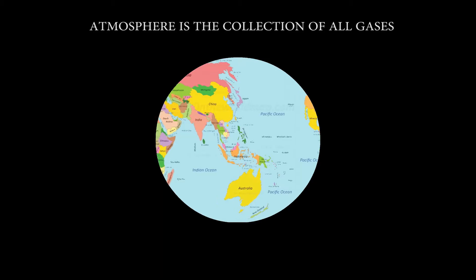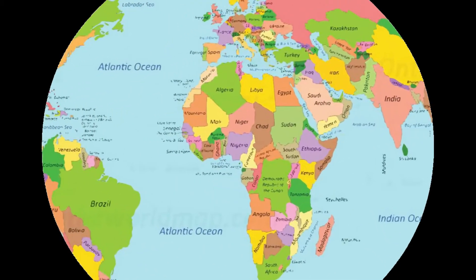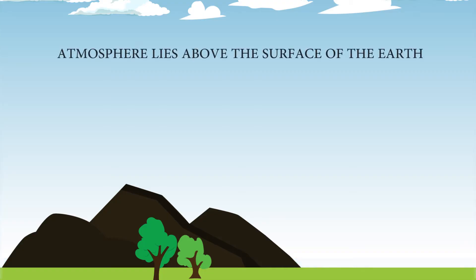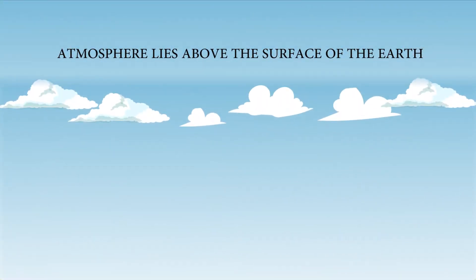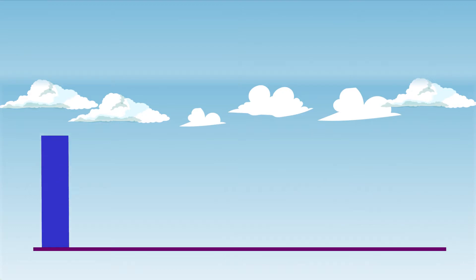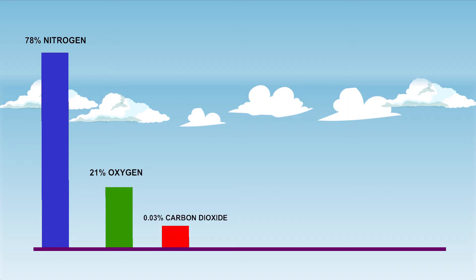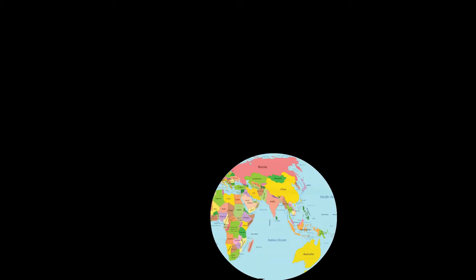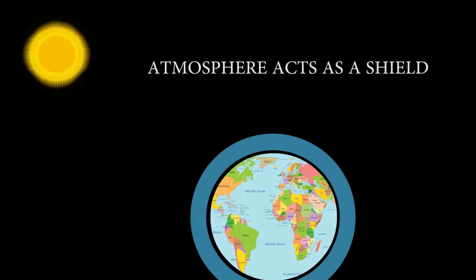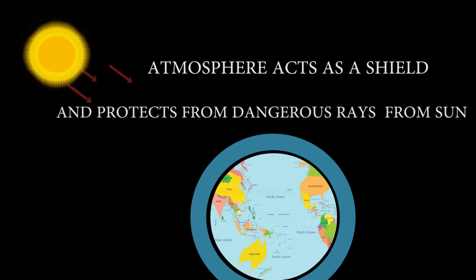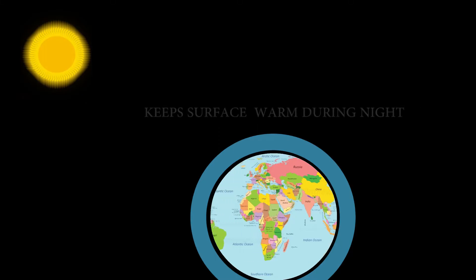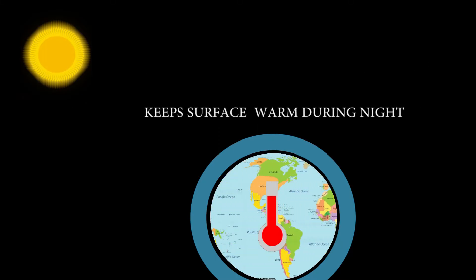Atmosphere is collection of all the gases on Earth. Major part of atmosphere lies above the surface of Earth. Atmosphere of Earth consists 78% nitrogen gas, 21% oxygen, 0.03% carbon dioxide, and rest are inert gases, water vapor, dust particles, hydrogen gas, etc. Earth's atmosphere acts as shield and protects living beings from dangerous rays from sun. It also helps in keeping surface warm during night time.